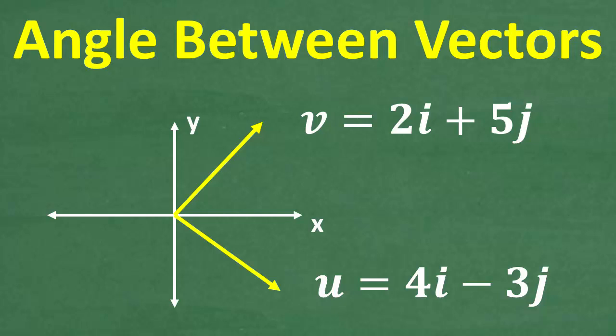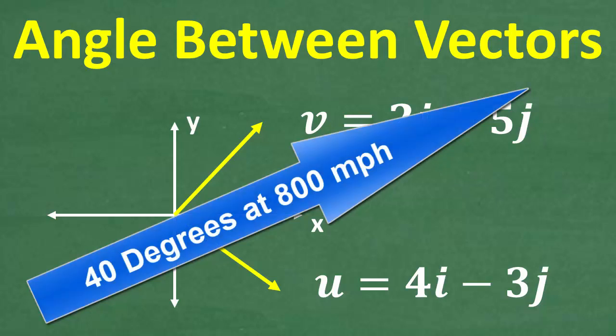Again, just a quick review. For those of you that don't really know what a vector is, a vector — we kind of represent vectors by arrows. Think of it as having a magnitude and a direction. So let's say an airplane is going at forty degrees at 800 miles per hour. There's a scalar component and a directional component. Together combined as one, that is a vector.